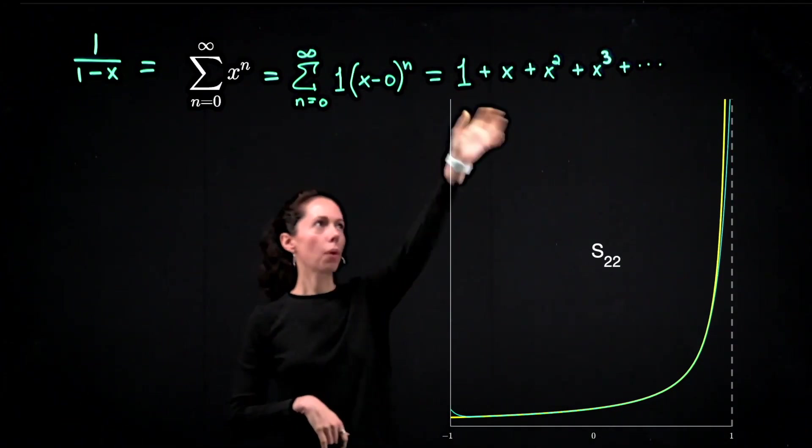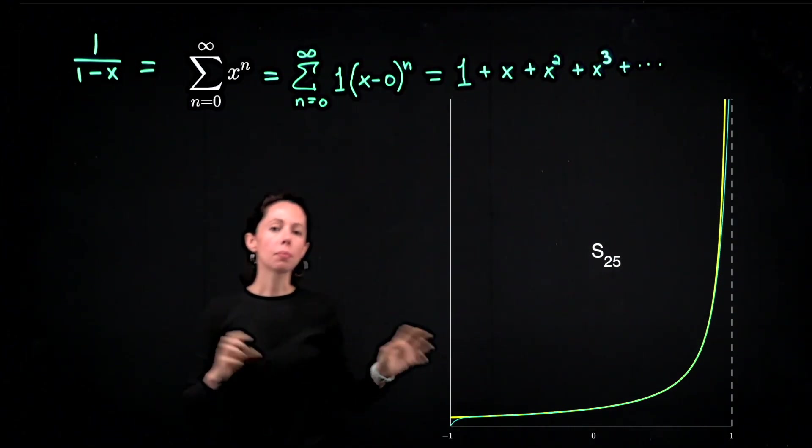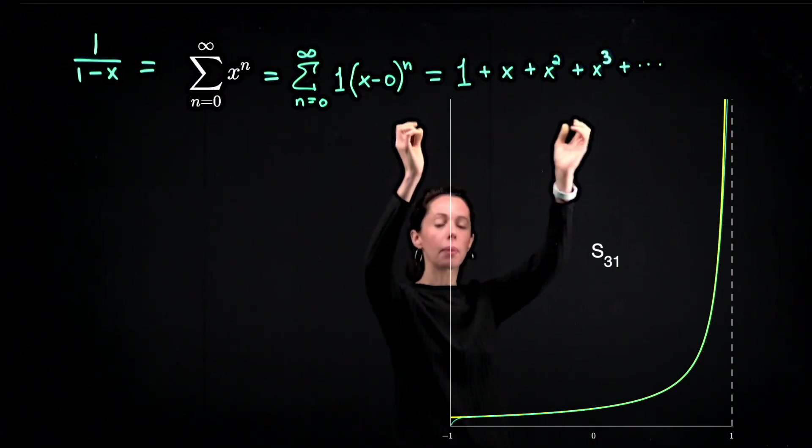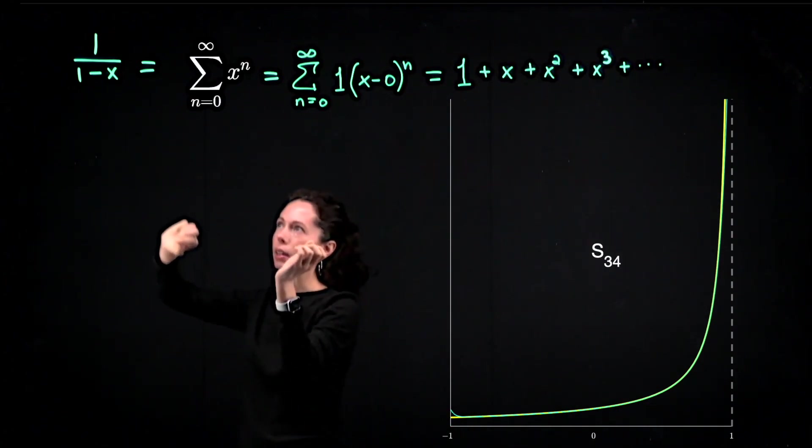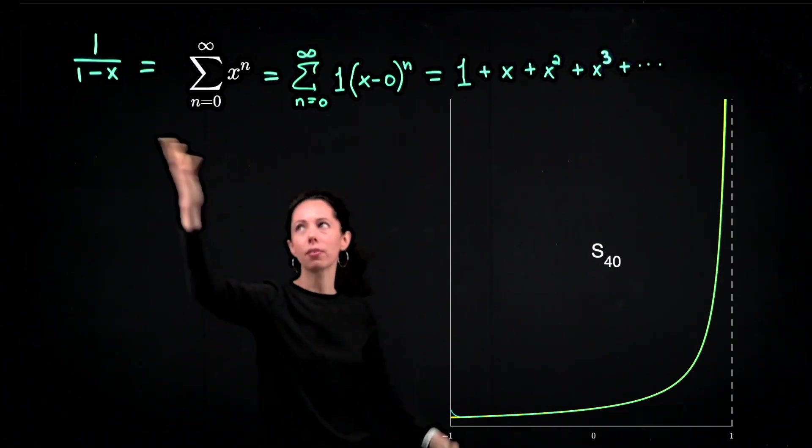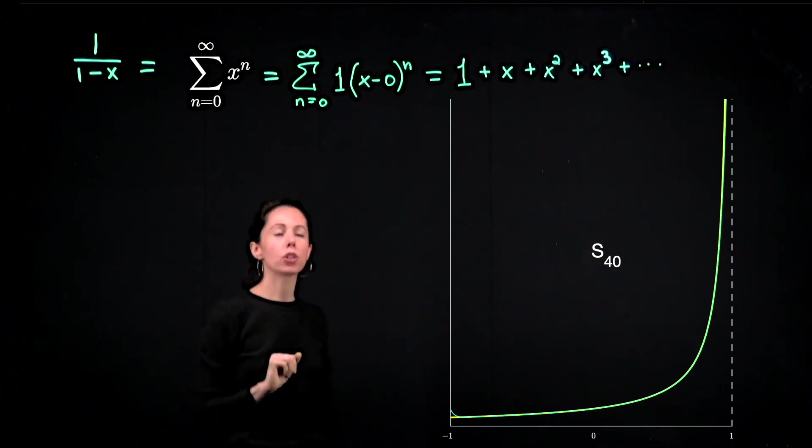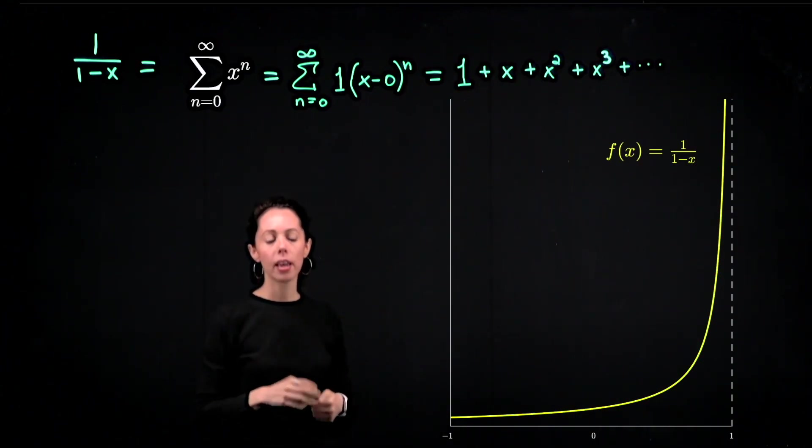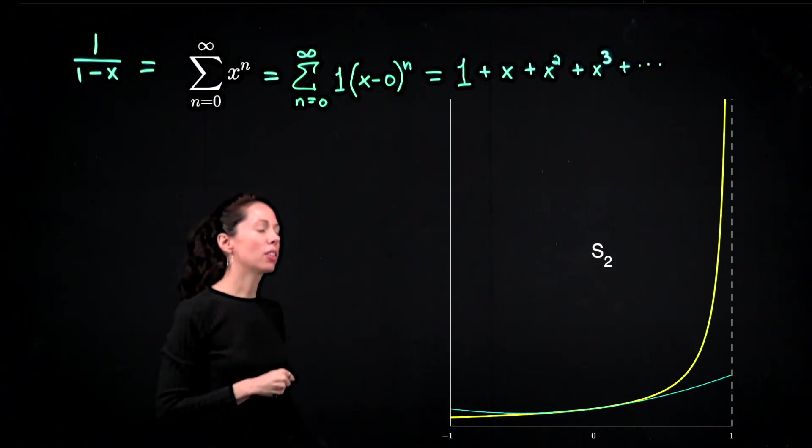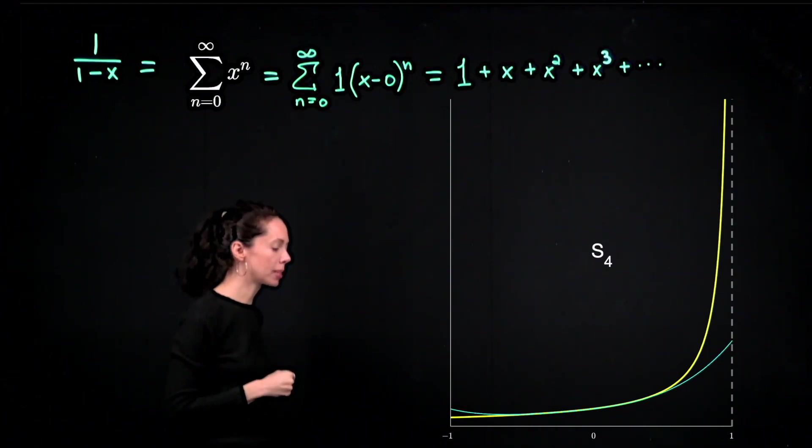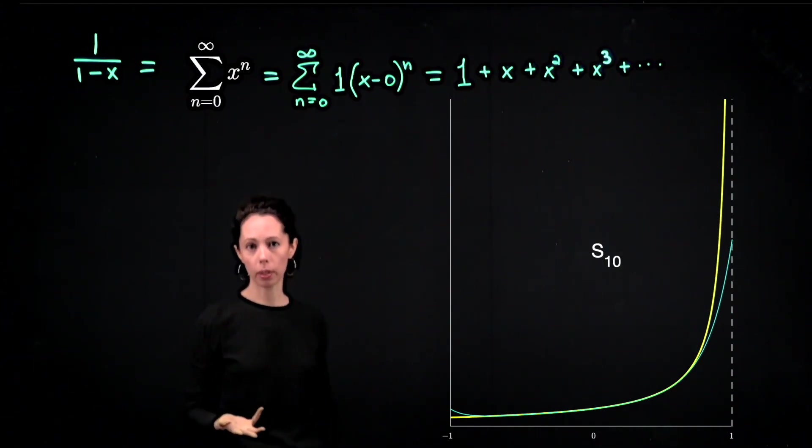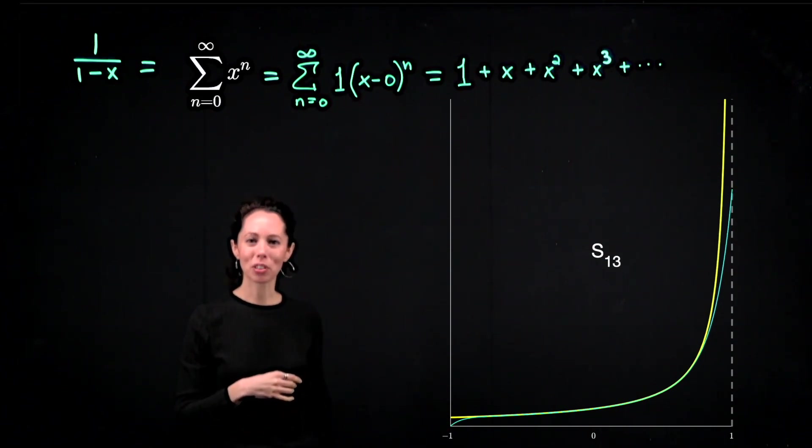So this function has this power series representation. Sometimes we go one direction, sometimes we go the other. Sometimes we will start with a power series like this, and we will try to see what kind of function we might get from that. That's what we did in this example, was we started with the series, and then we worked out what the function was. Often we will start with a function and try to come up with a power series representation for it. You might wonder why, why would we ever want to do this? Isn't this kind of nicer than that?